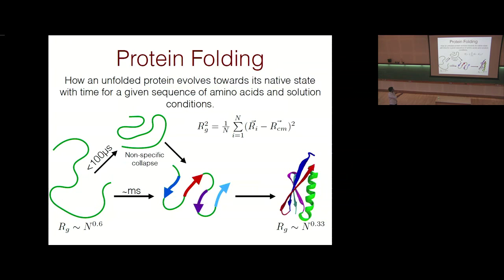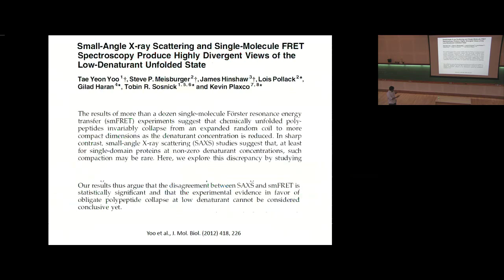The radius of gyration is defined using the positions of each monomer r_i and the center of mass r_cm. This talk is primarily motivated by a paper from the University of Chicago. They found that FRET experiments on a dozen-odd proteins show compaction during the burst phase of folding, but SAXS experiments show no compaction during the burst phase. They argue that the disagreement between SAXS and FRET is statistically significant, and the concept of protein collapse during the burst phase remains unresolved.